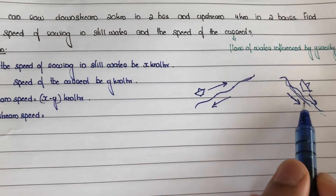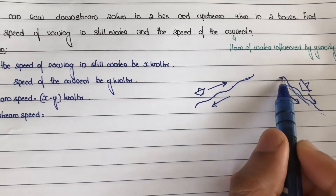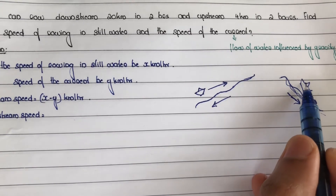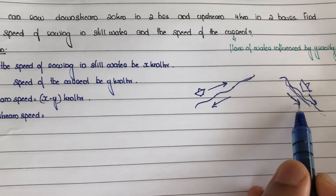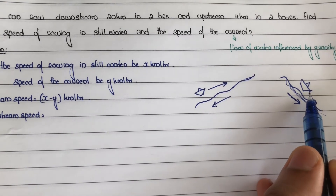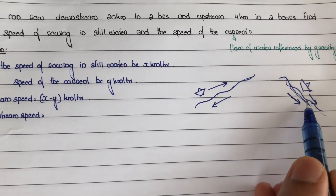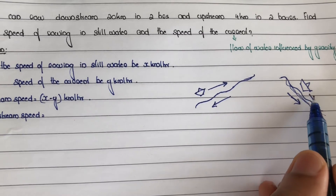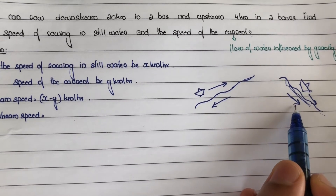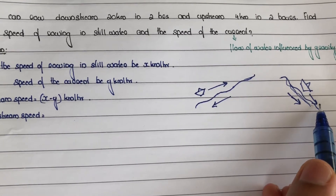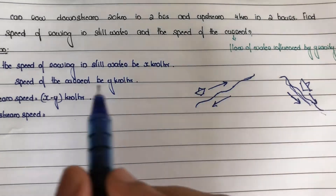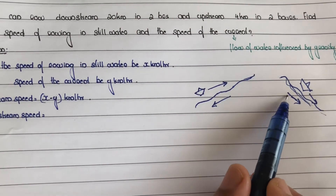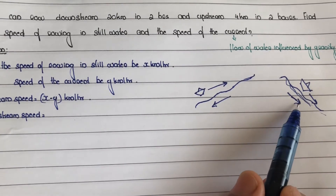Next step: consider downstream. Downstream means the boat moves in the same direction as the stream flow, which is downward. Because the boat and stream move in the same direction, the resultant speed is increased. So downstream speed is x plus y km per hour.